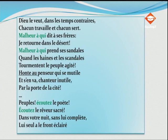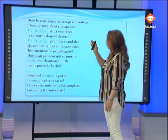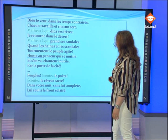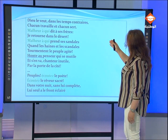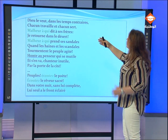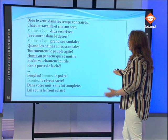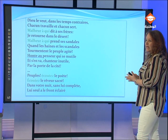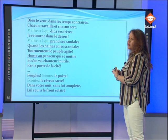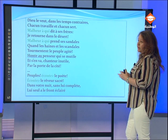Nous allons chercher d'autres procédés d'écriture. Regardez le troisième et le cinquième vers : « Malheur à qui », « Malheur à qui ». Victor Hugo emploie ces deux expressions au début des vers pour rendre compte de son avis concernant l'attitude de ces écrivains. Comment on appelle ce procédé qui consiste à répéter un mot ou un groupe de mots au début de vers, de phrases ou de strophes ? C'est une anaphore.